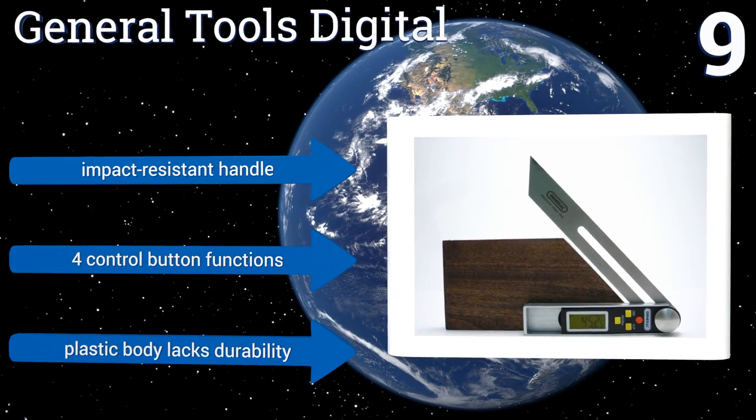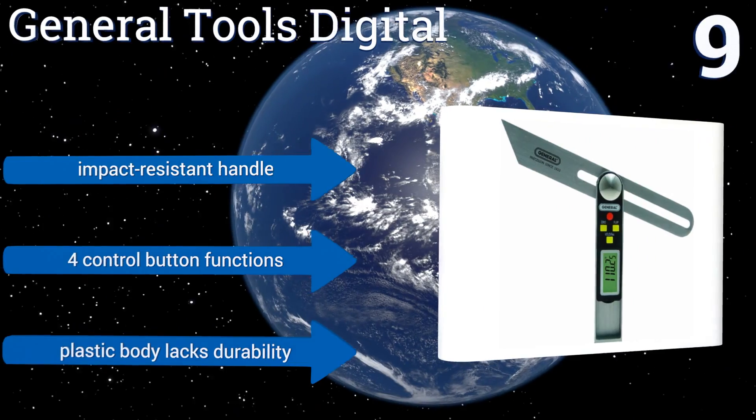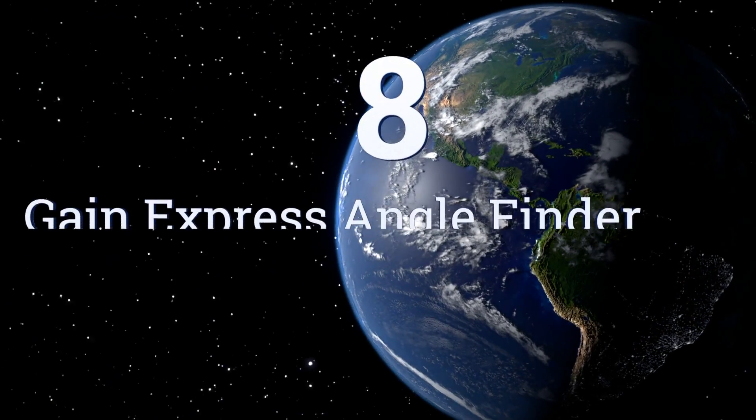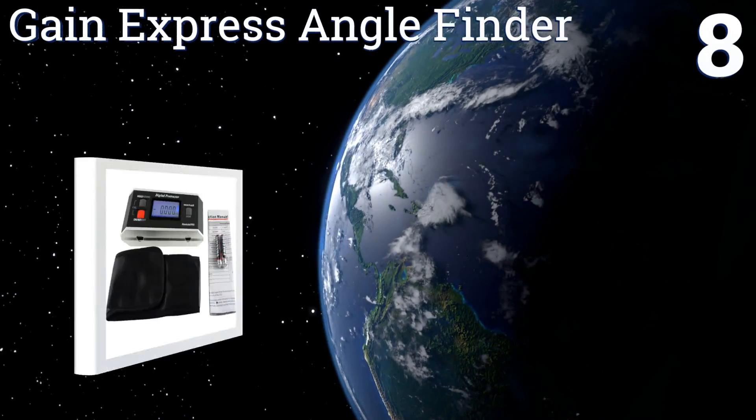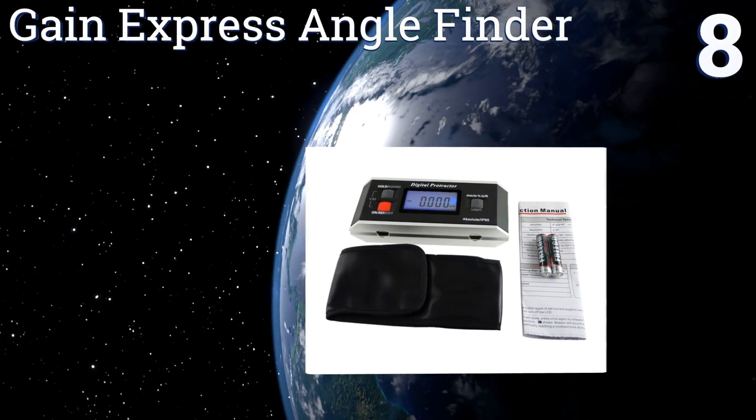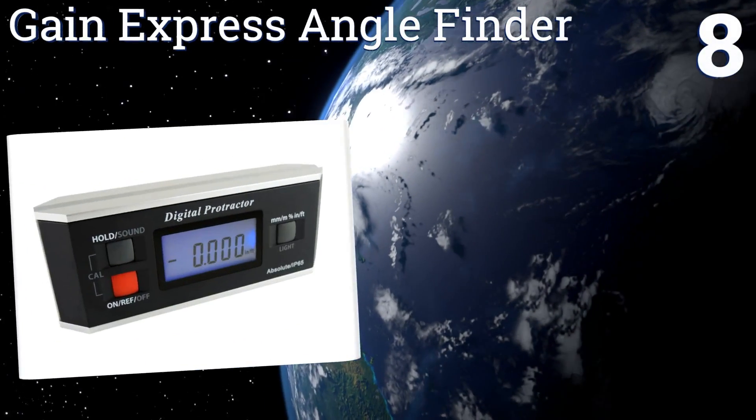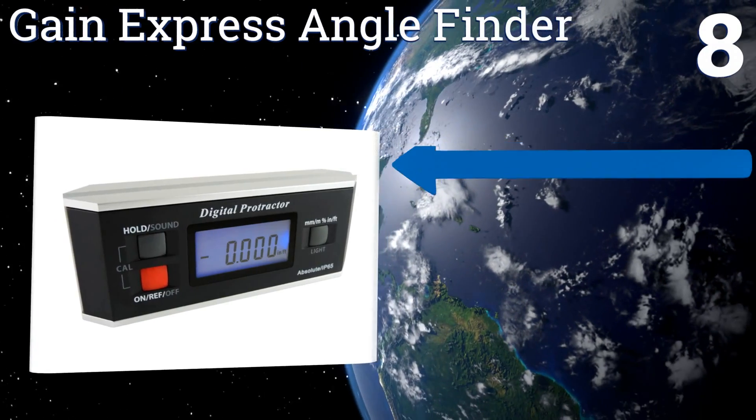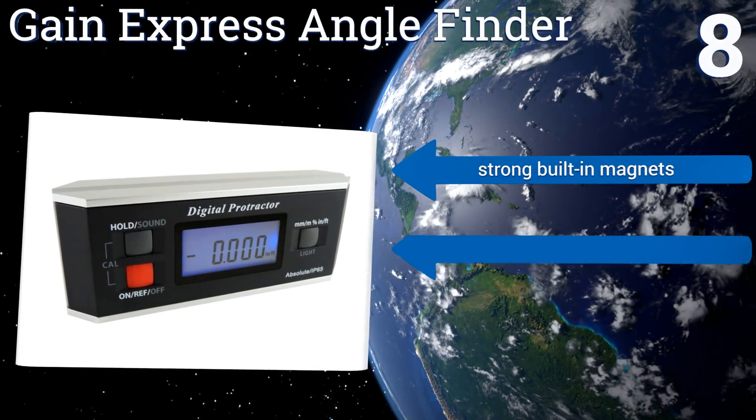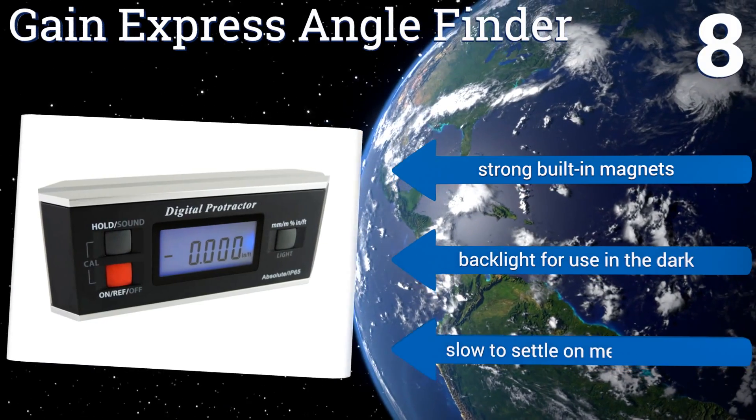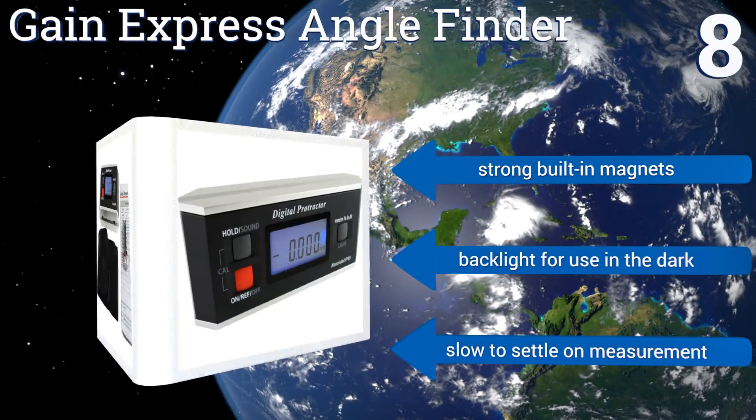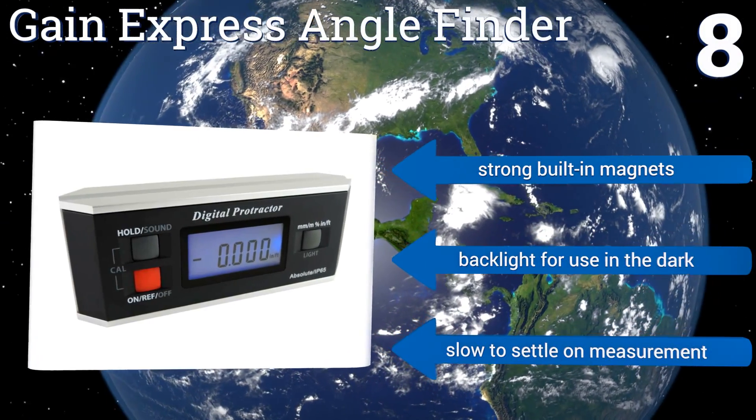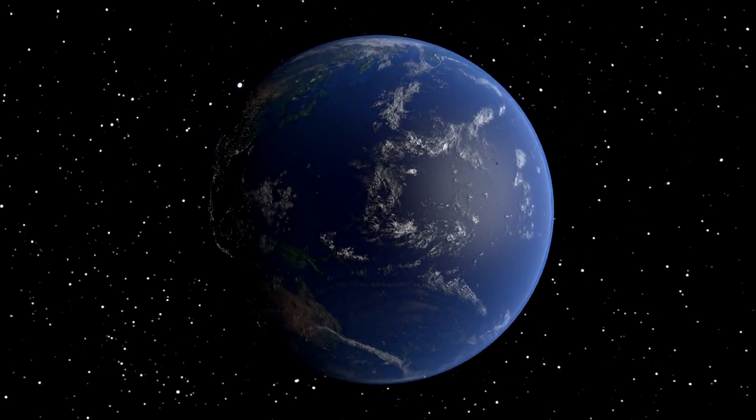Coming in at number eight in our list, a simple tool for calculating exact angles and checking the level of roof slopes, wheel alignment, and other applications, the Gain Express Angle Finder can be used for both absolute and relative measurement conversion at a 360 degree range. It comes with strong built-in magnets and a backlight for use in the dark. However, it is slow to settle on a measurement.